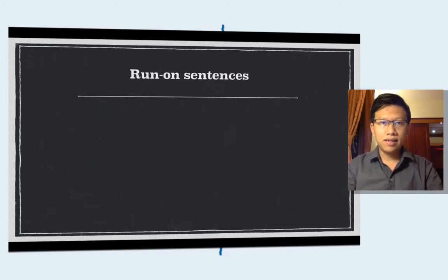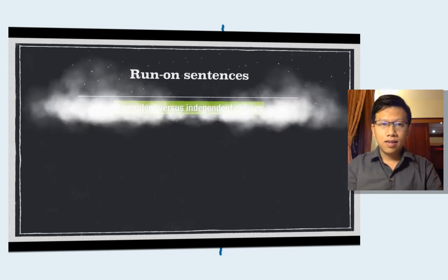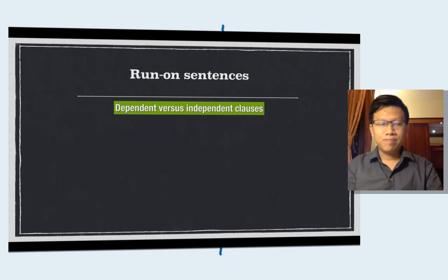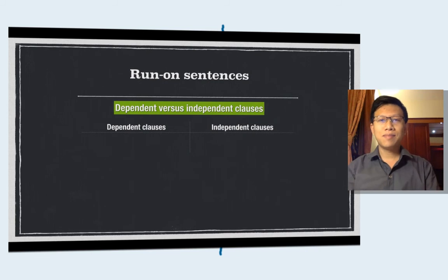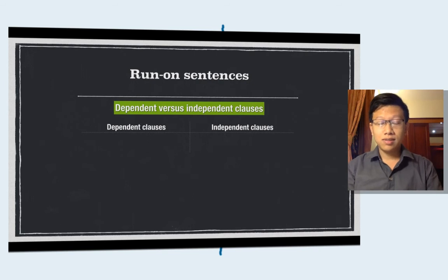Now, to the dependent and independent clause. Understanding the difference between the two types of clauses enables us to understand the random sentence better. How do we define a dependent and an independent clause? Very simple — the name says it all. The dependent clause is a clause that depends on another one for its existence; it cannot stand alone with meaning. While an independent clause certainly can stand alone with meaning.